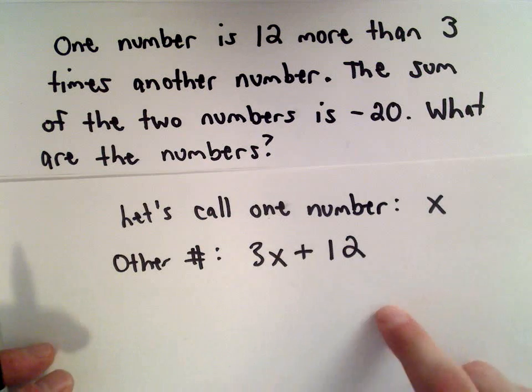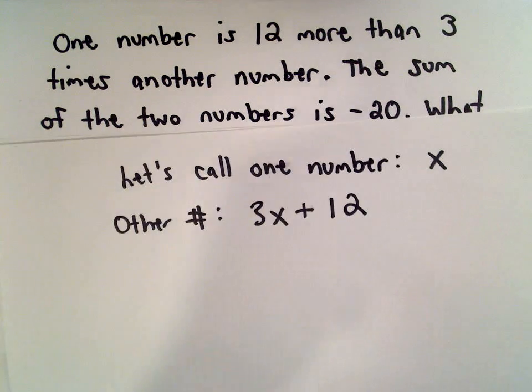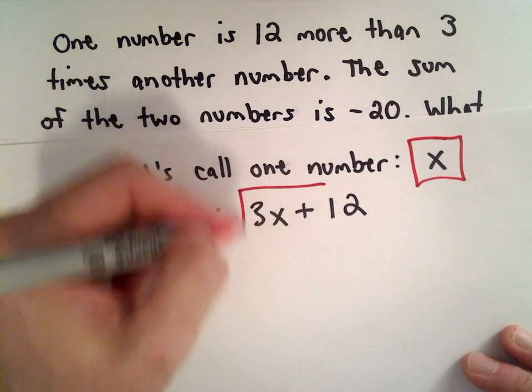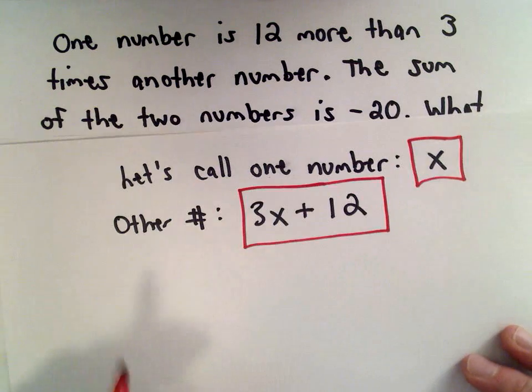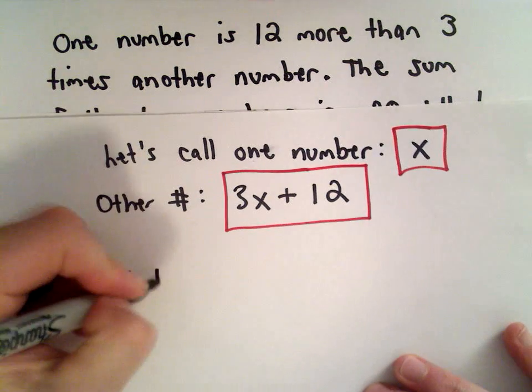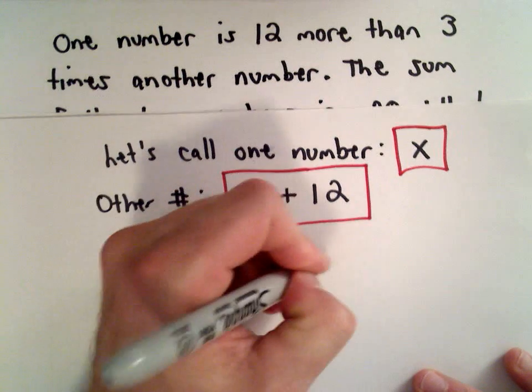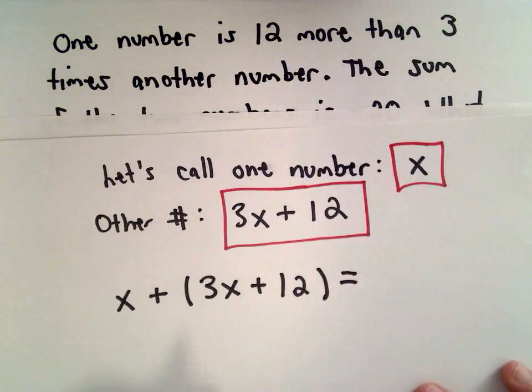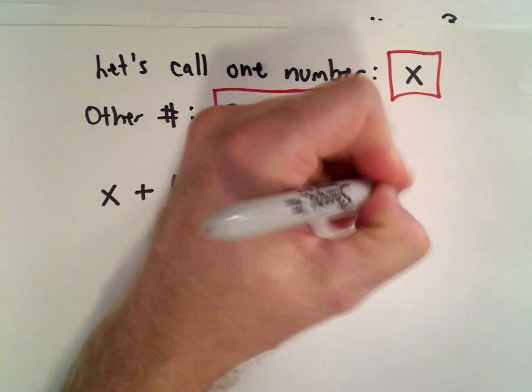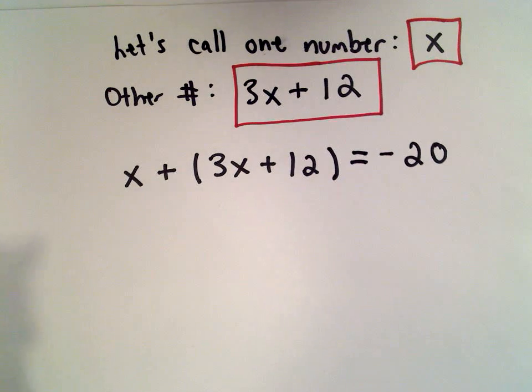We're given another relationship—the sum of the two numbers is negative 20. So here's one number, x, and my other number satisfies this relationship: 3x plus 12. So x plus my other number, 3x plus 12, equals negative 20. We want to know what those two numbers are. Now we've got a nice little algebra equation we can solve.